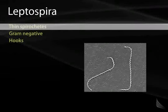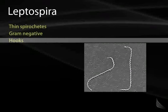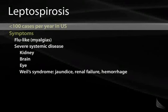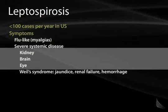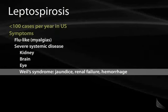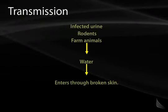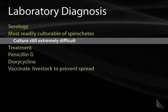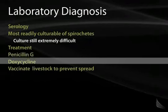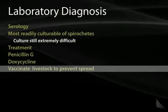Leptospira interrogans are thin, gram-negative spirochetes that often have a hook formation, resembling a question mark. Leptospirosis is uncommon — fewer than 100 U.S. cases per year — with flu-like symptoms and myalgias, but can cause severe systemic disease in the kidney, brain, and eye. Weil's disease presents with jaundice, renal failure, and hemorrhage. Transmission comes from infected urine of rodents and farm animals contaminating water; exposure through a break in the skin while kayaking or in contaminated water leads to infection. Lab diagnosis is based on serology; leptospirosis is the most readily culturable of the spirochetes, though still difficult. Treatment is penicillin G or doxycycline, and livestock can be vaccinated to prevent spread.